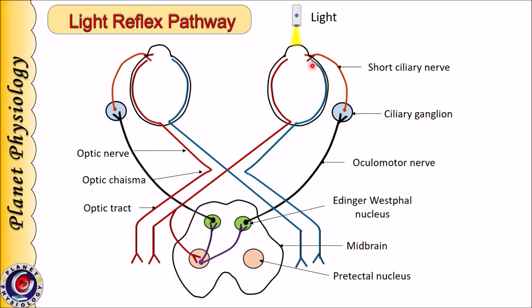From the ciliary ganglion, the short ciliary nerve transmits the signal to the ciliary muscle, causing them to contract, resulting in pupillary constriction. Signals from the other Edinger-Westphal nucleus are transmitted to the other eye to cause pupillary constriction of the opposite eye, causing consensual light reflex. Thus when the light is shown in one eye, there is bilateral pupillary constriction.